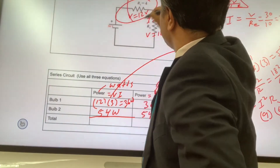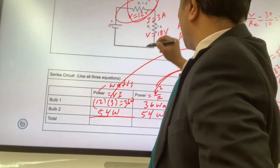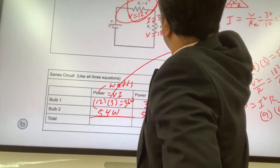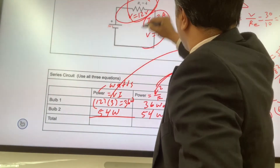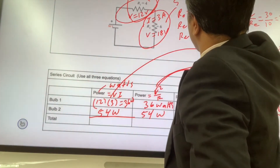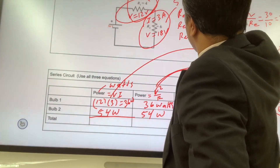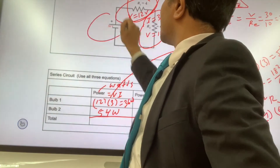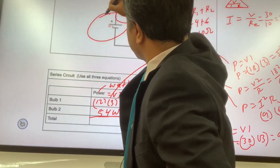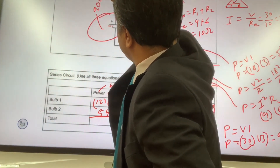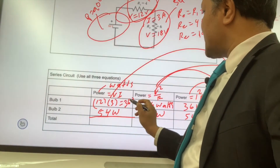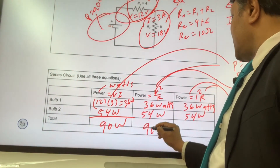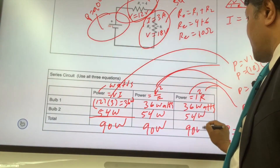So the total power in the circuit: the power in bulb one is 36 watts and the power in bulb two is 54 watts. Adding them together, 36 plus 54 equals 90 watts total.